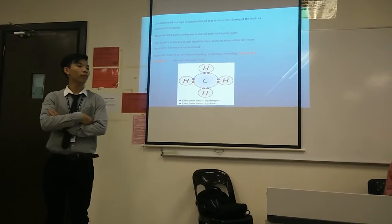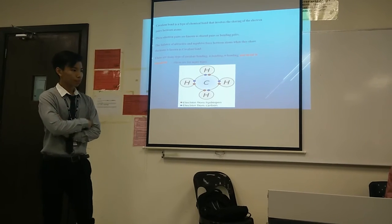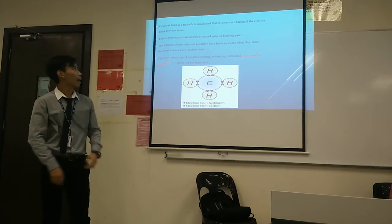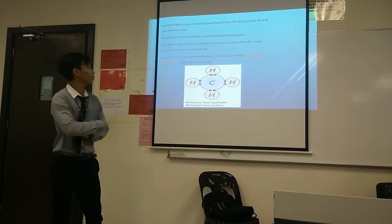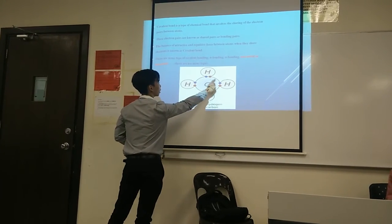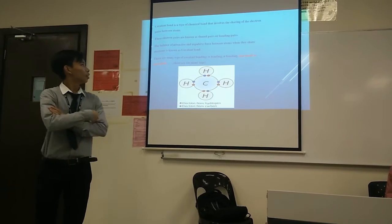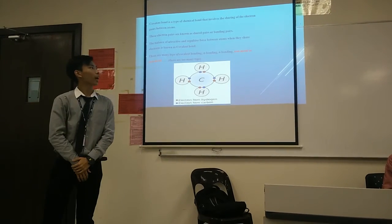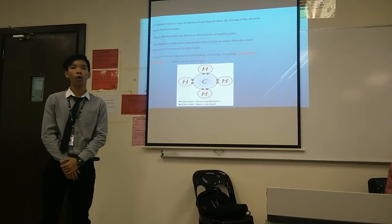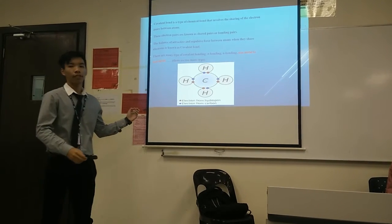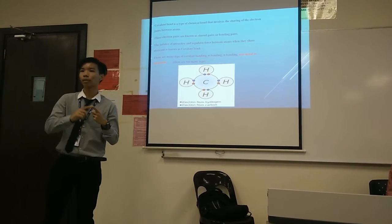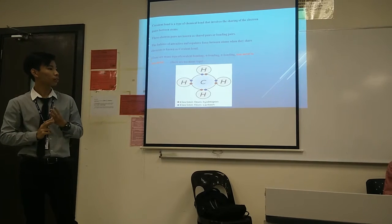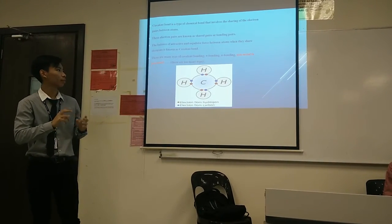Covalent bond is a type of chemical bond that involves a sharing of electron pairs between atoms. These electron pairs are known as shared pairs or bonding pairs. As you can see, this is the shared pairs. The balance of attractive and repulsive forces between atoms when they share electrons is known as covalent bond. There are many types of covalent bond, including sigma bonding, pi bonding, and also the normal one which is non-metal to non-metal. I'm not going to explain sigma and pi bonding because they are very complex.